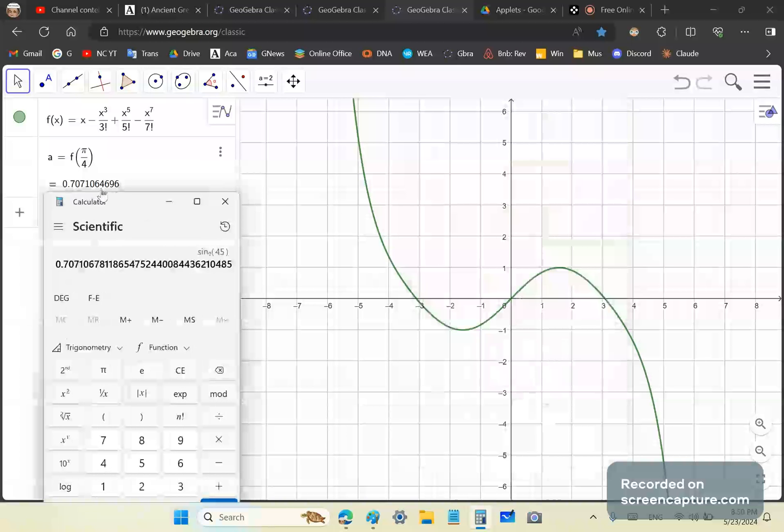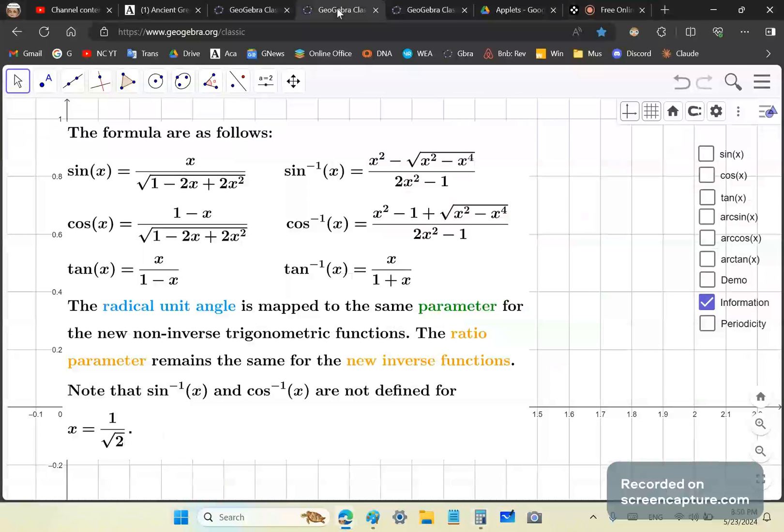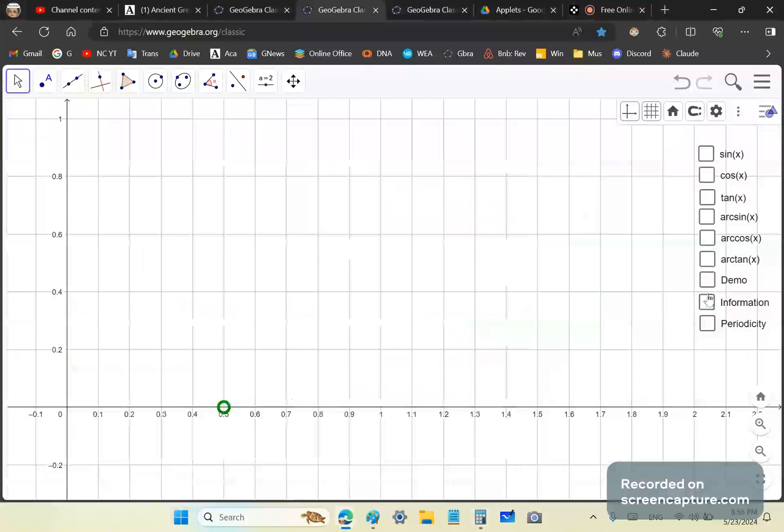But if you take the sine of 45 degrees, Newton's is off after the sixth digit. It's totally off because this calculator is far more accurate. So it says 644696 and it should be 781. What happens when we use the brilliant John Gabriel's closed form trigonometric formulas?